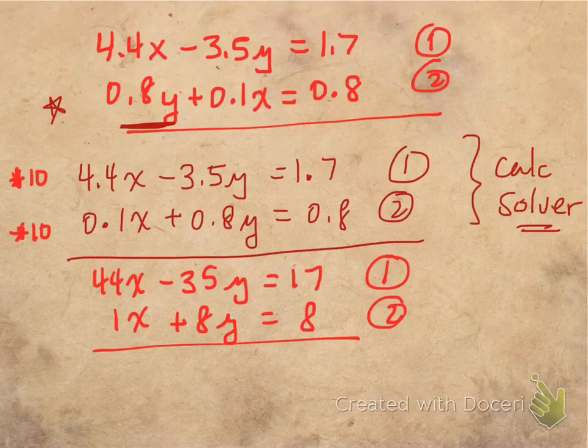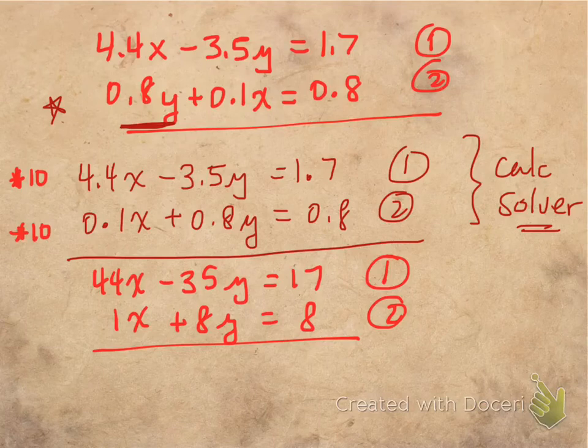And now you can see it's really easy to come up with the multiples for eliminating one of the variables. The variable that we should eliminate is perhaps variable x.